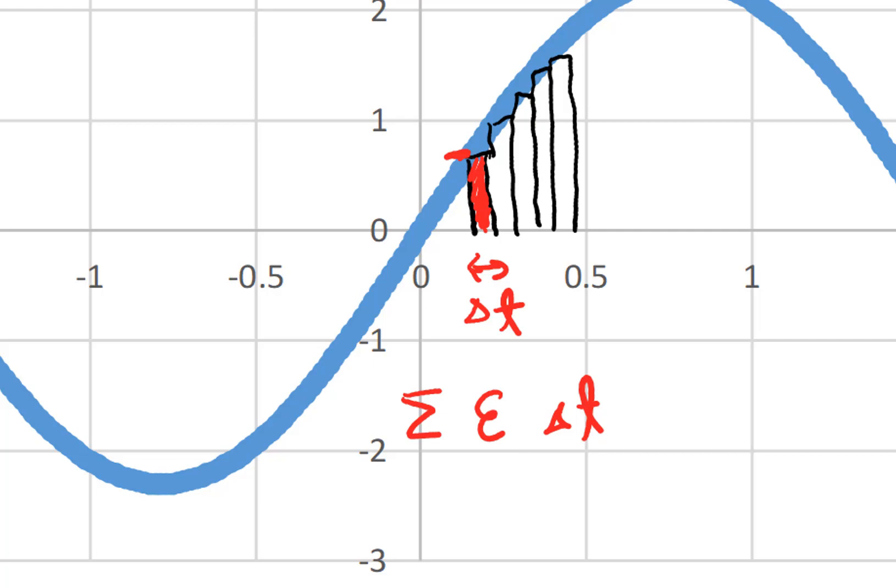But delta T is exactly the same for all of our data. So I'm just going to drop it and sum up my electric potentials and say that that is proportional to the area under the curve.